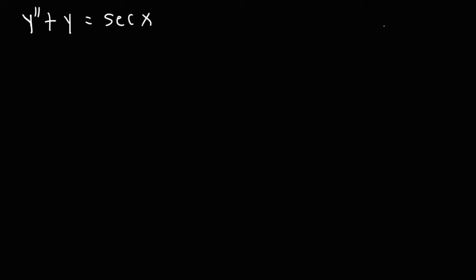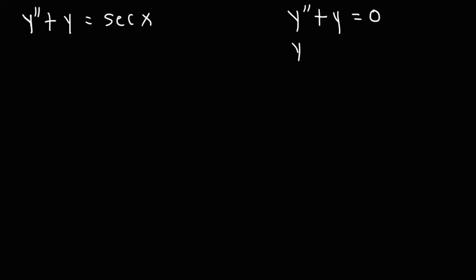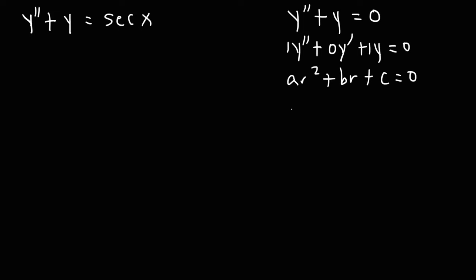The first thing we need to do is solve the homogeneous version of that equation, where g is set to 0. Here g is secant x, so this is the non-homogeneous version. We can represent this as y double prime plus 0 y prime plus y equals 0, giving us coefficients 1, 0, 1 for the auxiliary equation. So a is 1, b is 0, c is 1, and we have r squared plus 1 equal to 0.